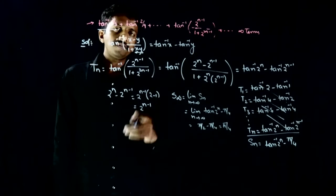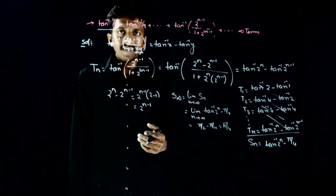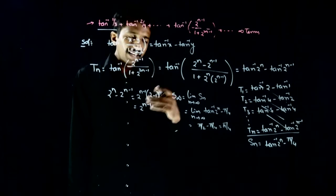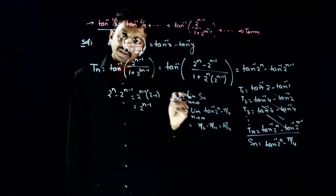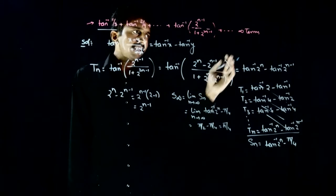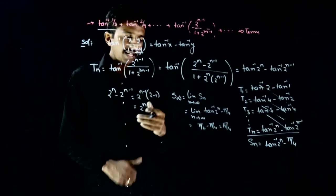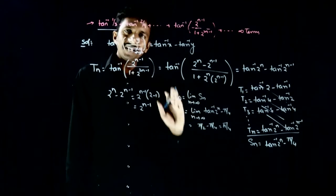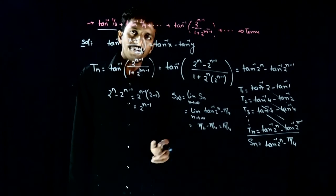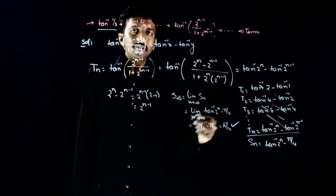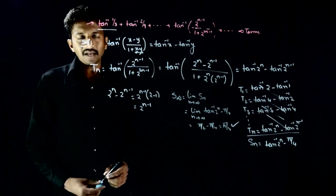So the sum of the sequence up to infinite terms tends to pi/4. As n tends to infinity, Sₙ gets very, very close to pi/4. Therefore, S∞ = pi/4 is the answer.